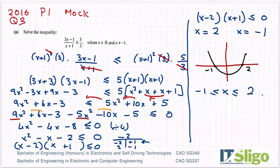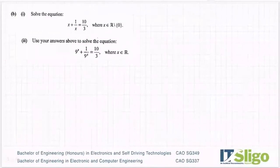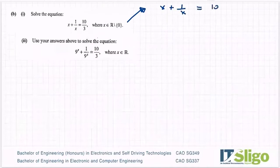It's really important that you know how to do your inequalities. Part B then said: solve the equation (x + 1)/x = 10/3. So I have (x + 1)/x = 10/3. That x there is over 1 if you want, so my common denominator here is 3x.